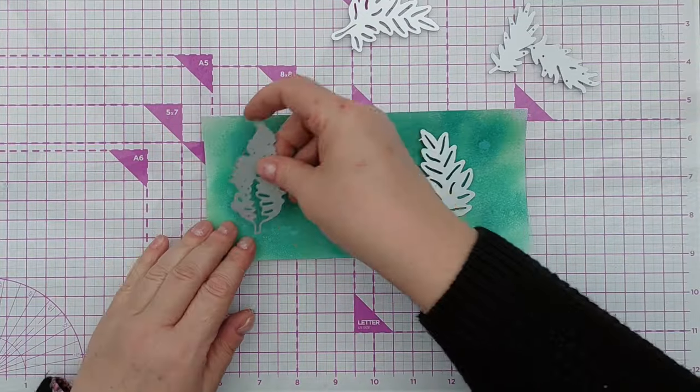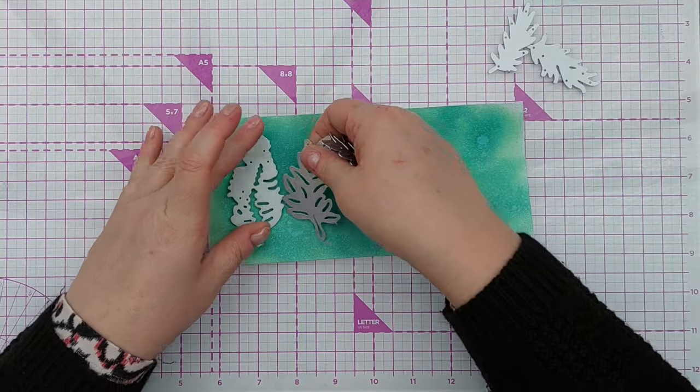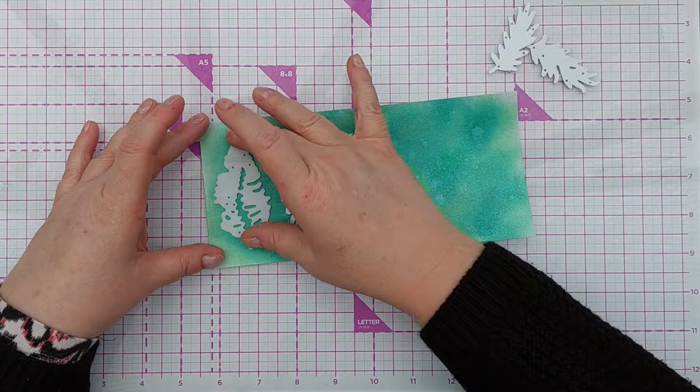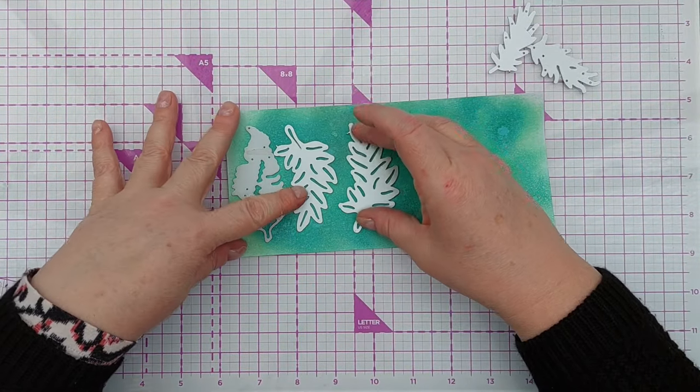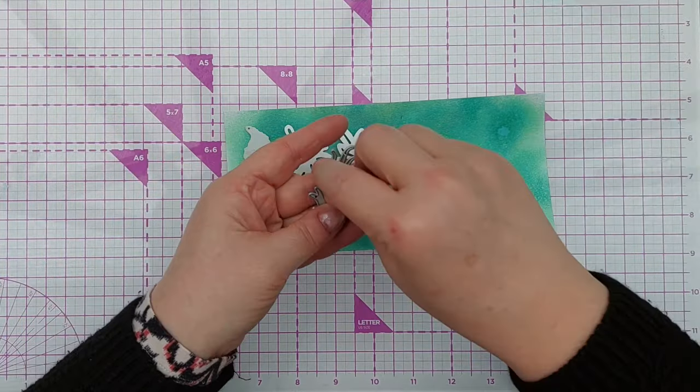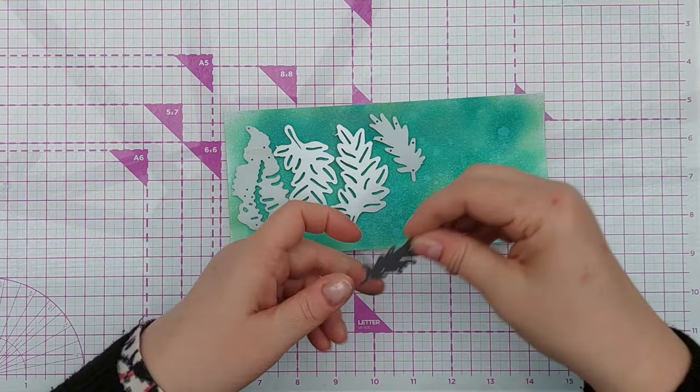I've got my dies. I've got a fern die. I've got these two mirror images. I'm just going to lie them along there, try and maximize the amount I can get from this piece. And then two little bits. These aren't identical, but they're fairly similar, so they're going to work for me.